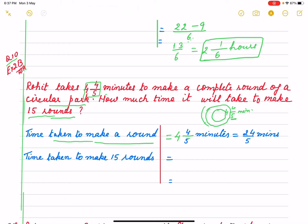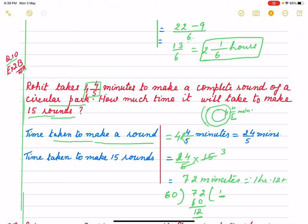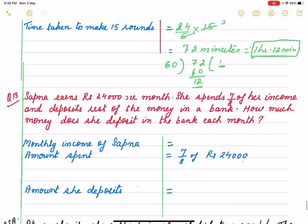Change four and four by five into an improper fraction: five times four is twenty, plus four is twenty-four by five minutes. For fifteen rounds it will be twenty-four by five multiplied by fifteen — fifteen divided by five is three, so three times twenty-four is seventy-two minutes. We can also change this into hours: seventy-two minutes equals one hour and twelve minutes.